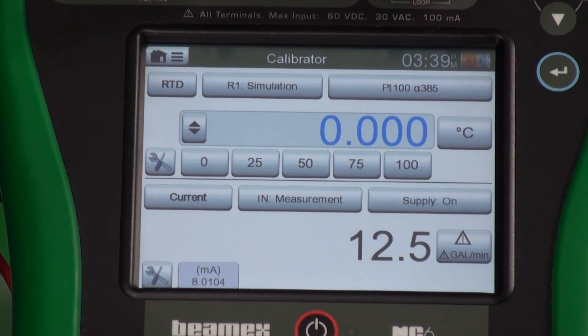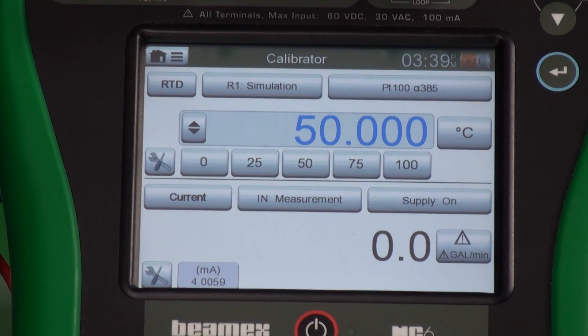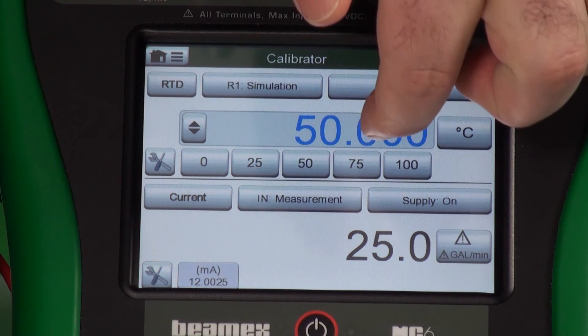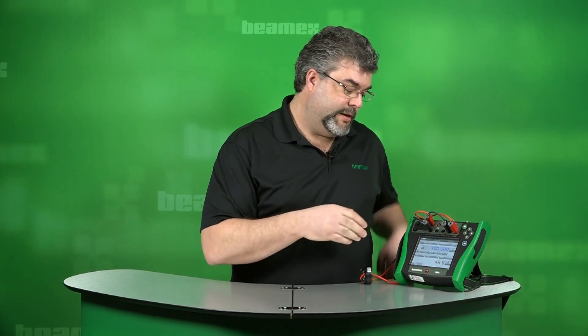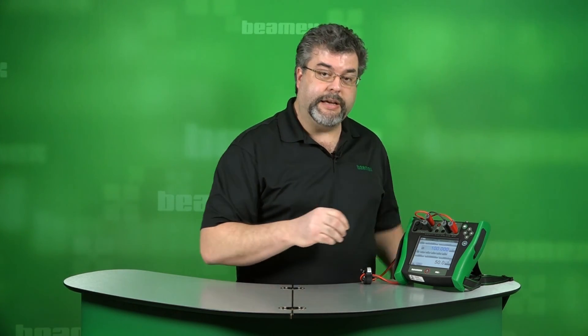So let me put in a 0. So at 0 in, we should be getting 0 gallons per minute. Let's take it to the midpoint. 50 degrees in should give us our midpoint on the output, which is 25 gallons per minute. So again, this example isn't designed to make sense. It's just designed to get you thinking outside the box of the capabilities inside this box and how you might use those.